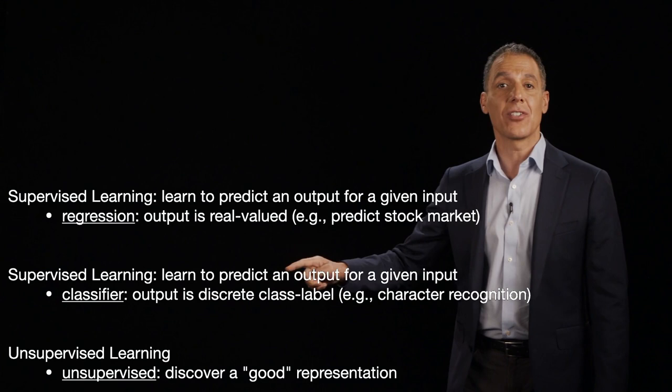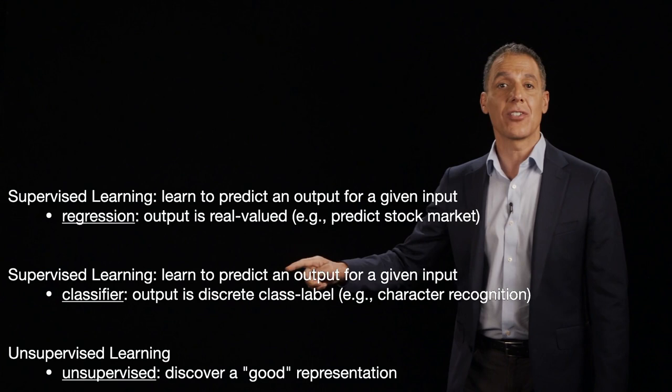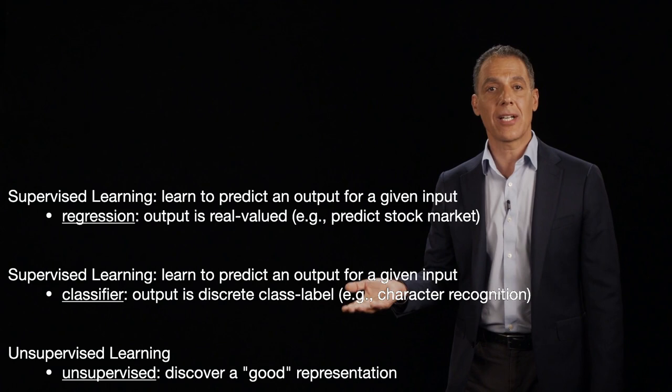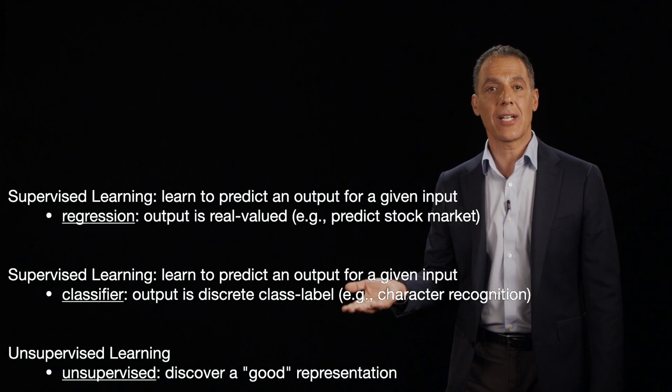Supervised learning can also be thought of as a classification problem, where the output is a discrete class label. Think, for example, character recognition — I want to scan a document and tell: is it an A, is it a B, is it a C? Is it a 0, a 1, or a 2? That's a type of discrete class label.